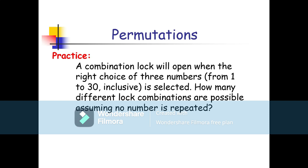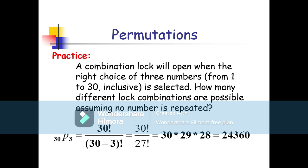A combination lock will open when the right choice of 3 numbers from 1 to 30 inclusive is selected. How many different lock combinations are possible assuming no number is repeated? Since no number is repeated, we use permutation: nPr = 30P3. With n=30 and r=3, we compute 30! / (30−3)! = 30! / 27!. Simplifying, we get 30×29×28 = 24,360.